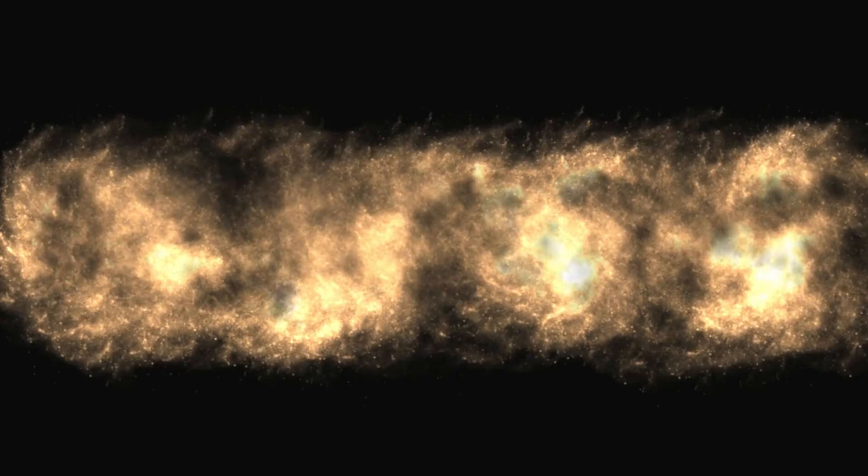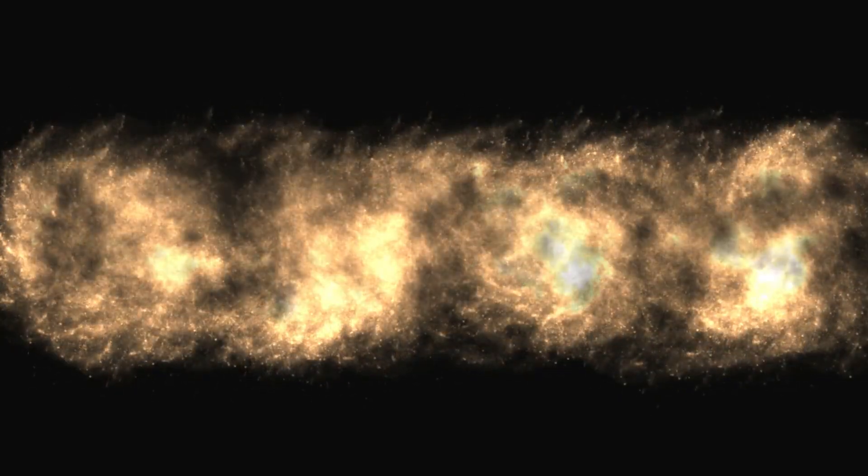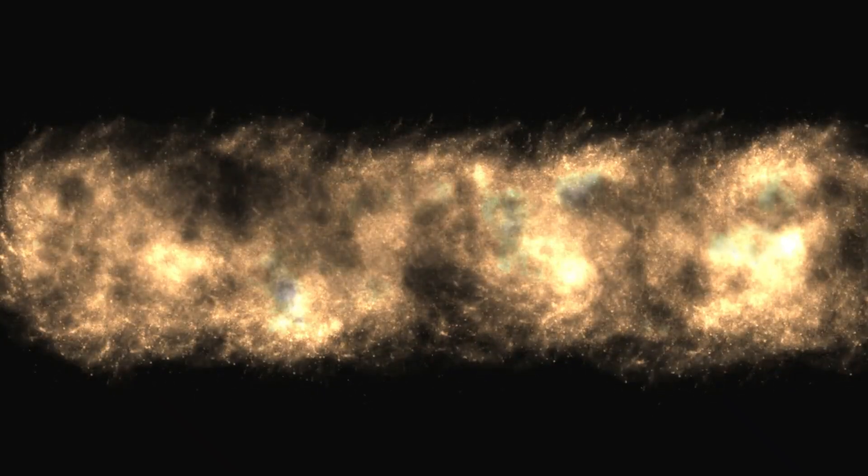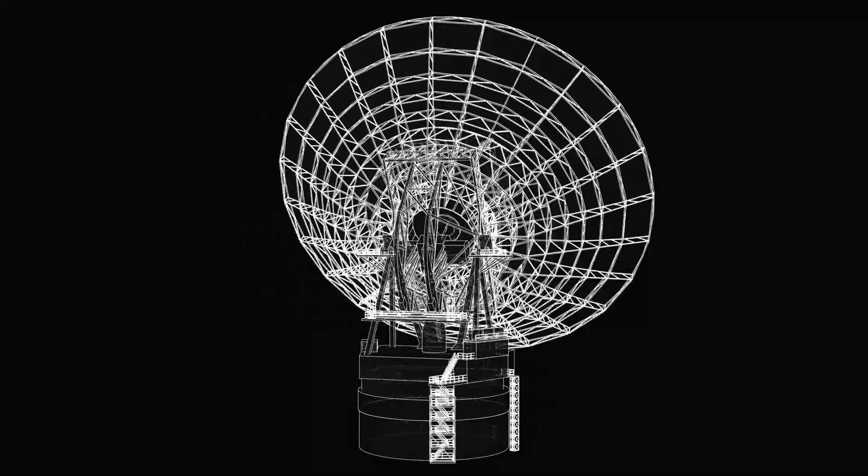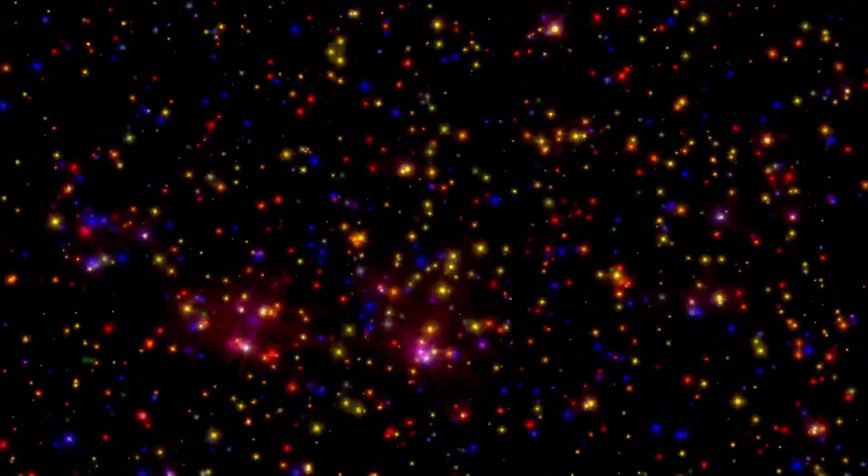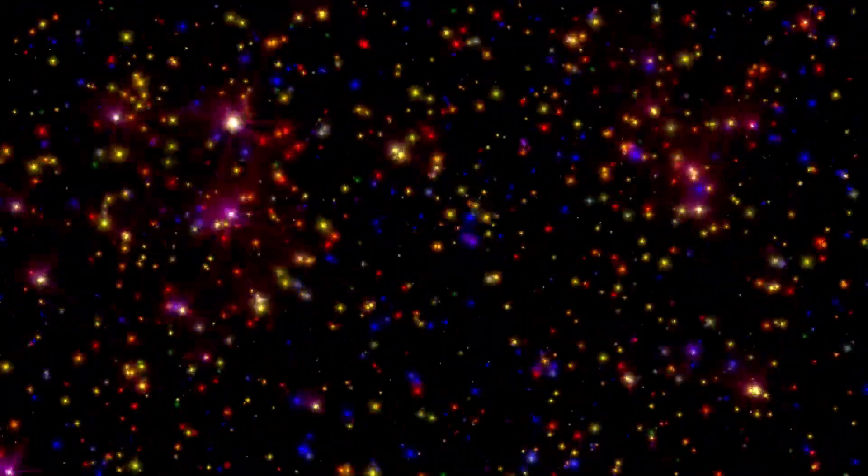Most comets accelerate due to sublimation of volatile ices, forming visible tails. But Oumuamua had no tail, no coma, and no observable dust or gas. This led to more speculation.